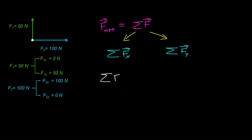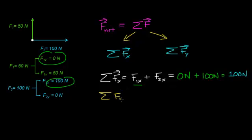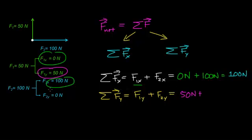When I add up all the forces acting in the x direction, it's F1 in x plus F2 in x. F1 in the x direction is 0 Newtons, and F2 in the x direction is 100 Newtons, giving a net x force of 100 Newtons. For the y direction, F1 in y is 50 Newtons and F2 in y is 0 Newtons, so the net y force is 50 Newtons.